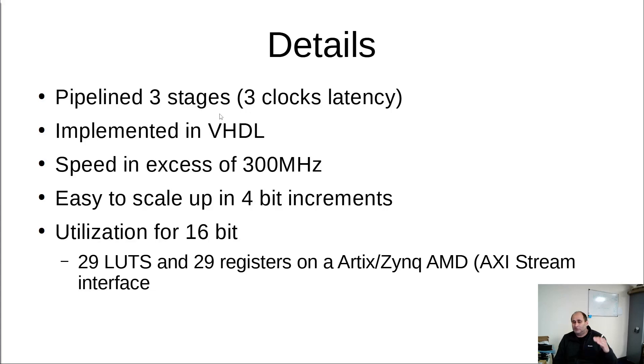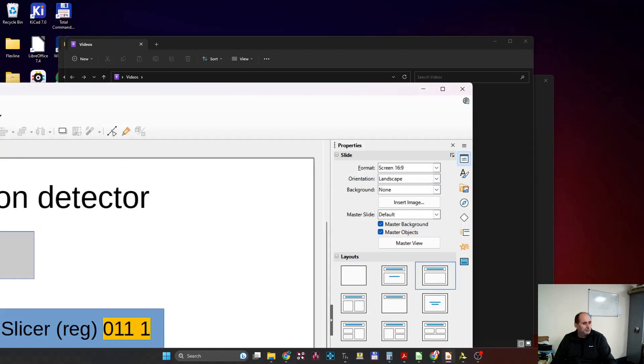So the detail, this is all implemented on three stages. So it's pipeline on three stages. On the first stage, we look where the interesting bits are, and we slice them. On the second one, we decode exactly where the MSB is. And in the same time, we address, we extract the four bits to address the higher granularity lookup table. And of course, on the third clock, we add them together. So we have the final value. Now, it's very compact, it takes only 29 LUTs and 29 registers. The 29 registers are because there is pipelining.